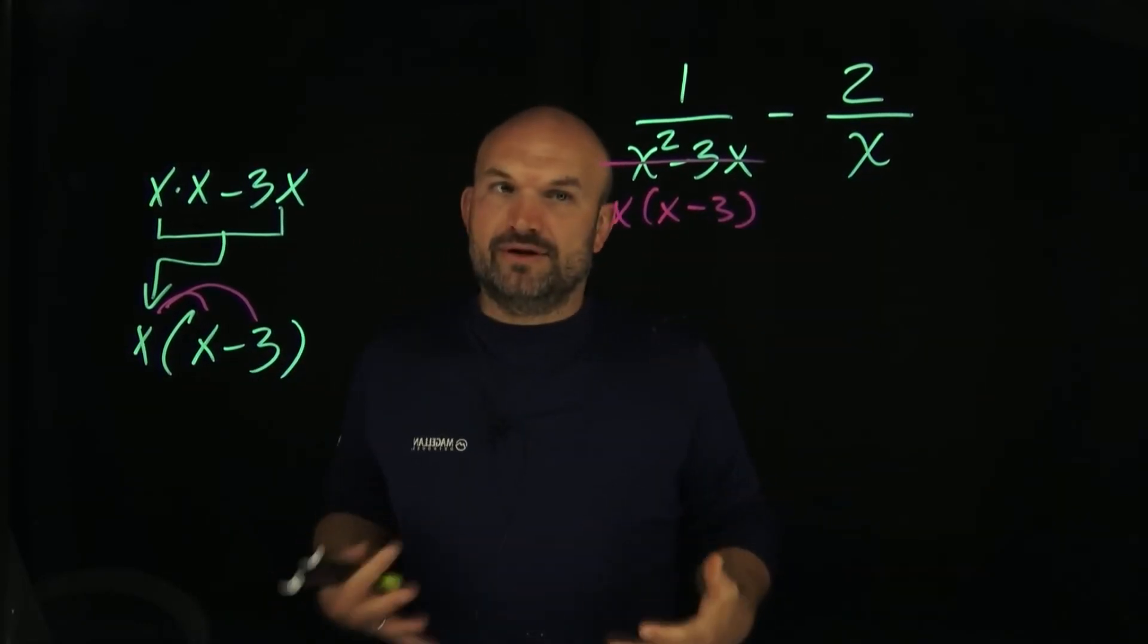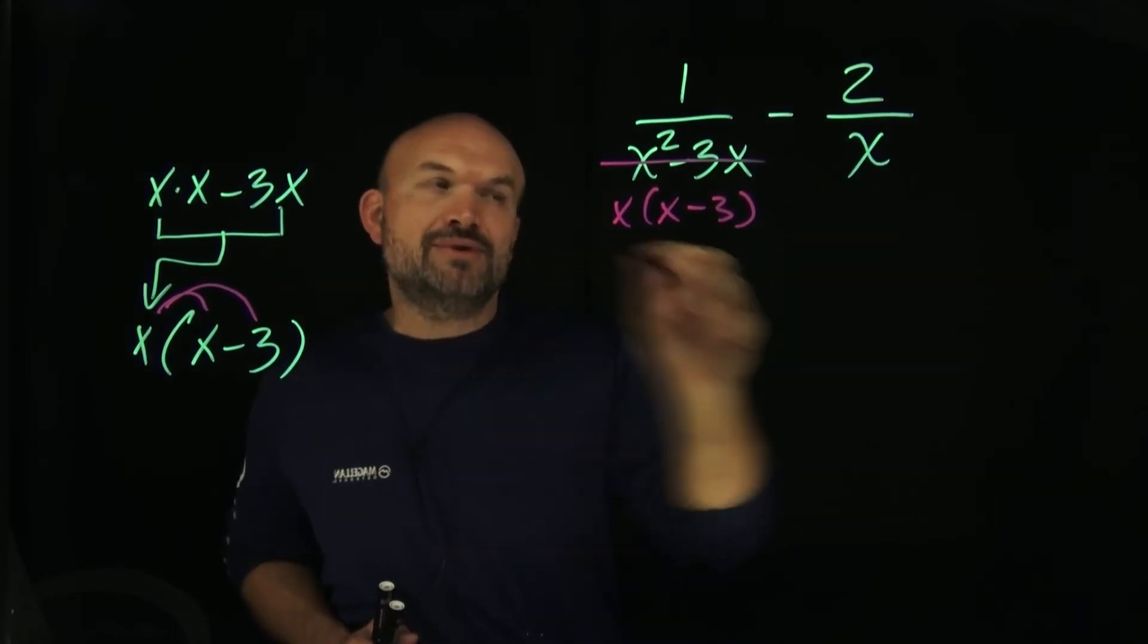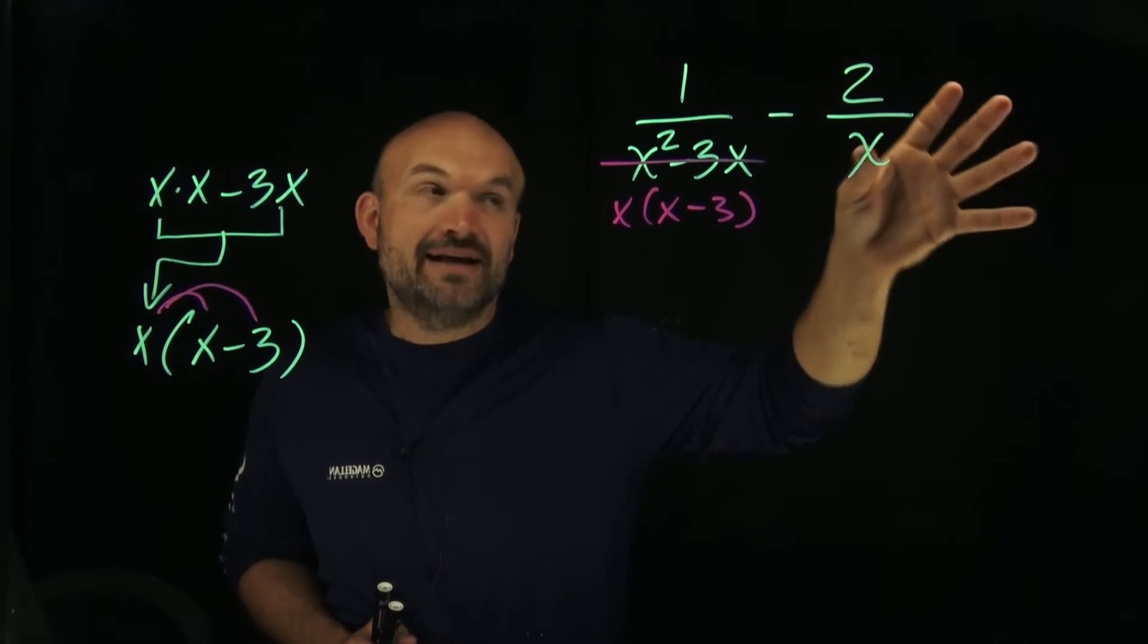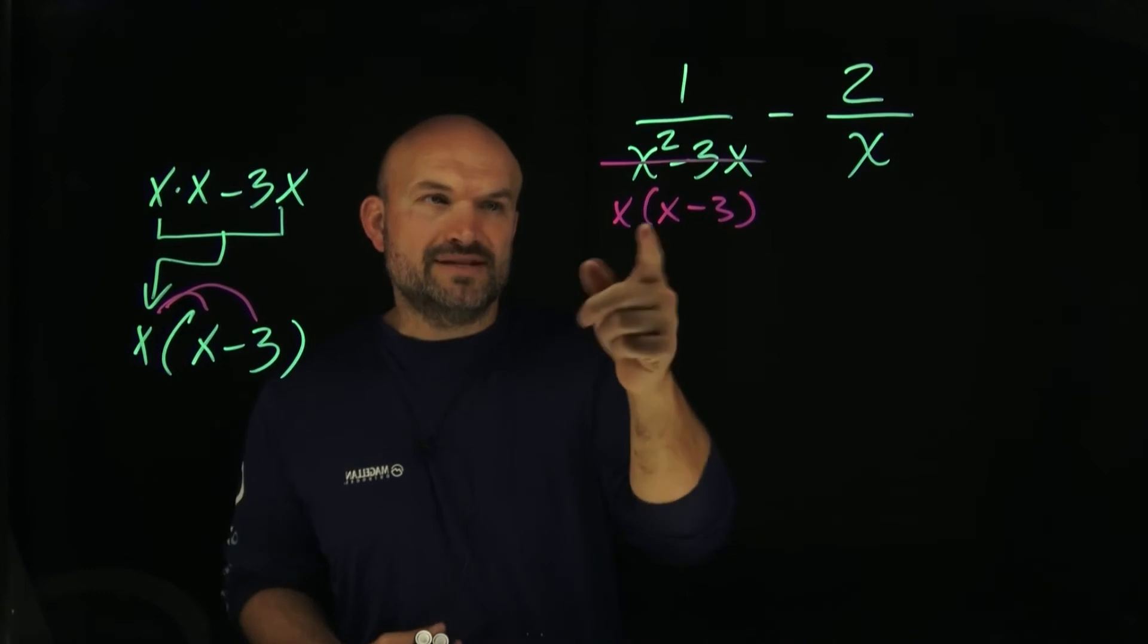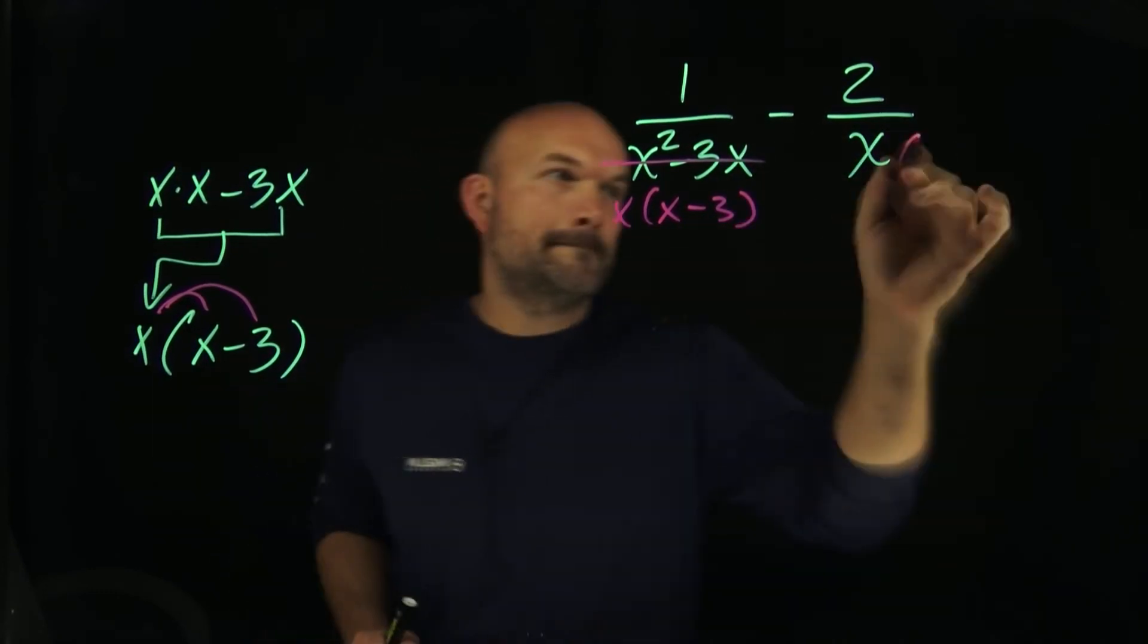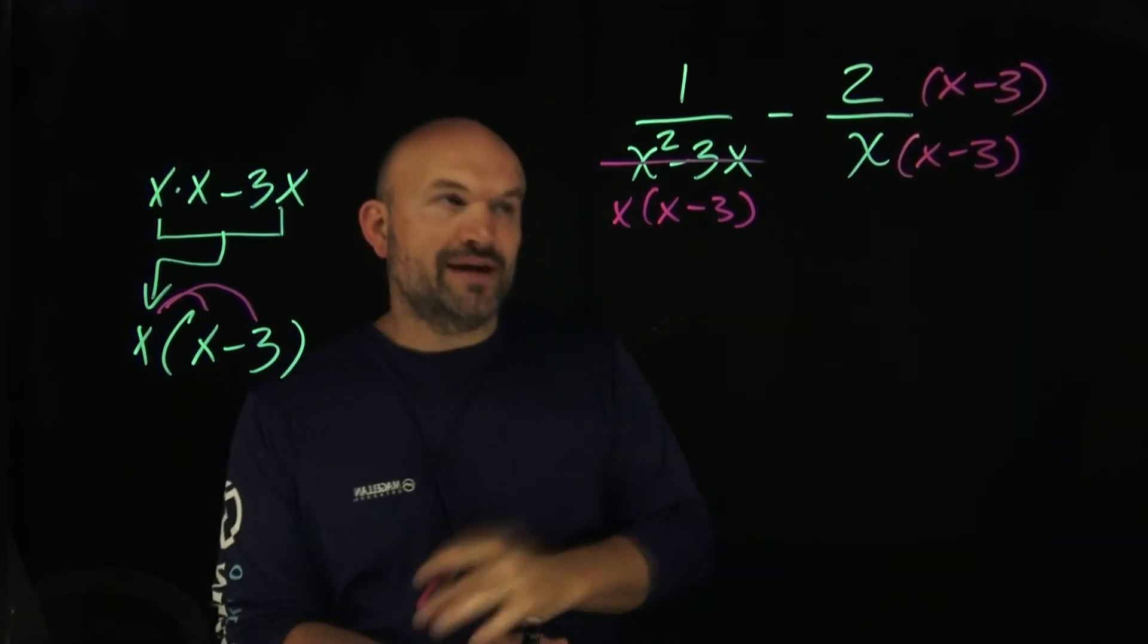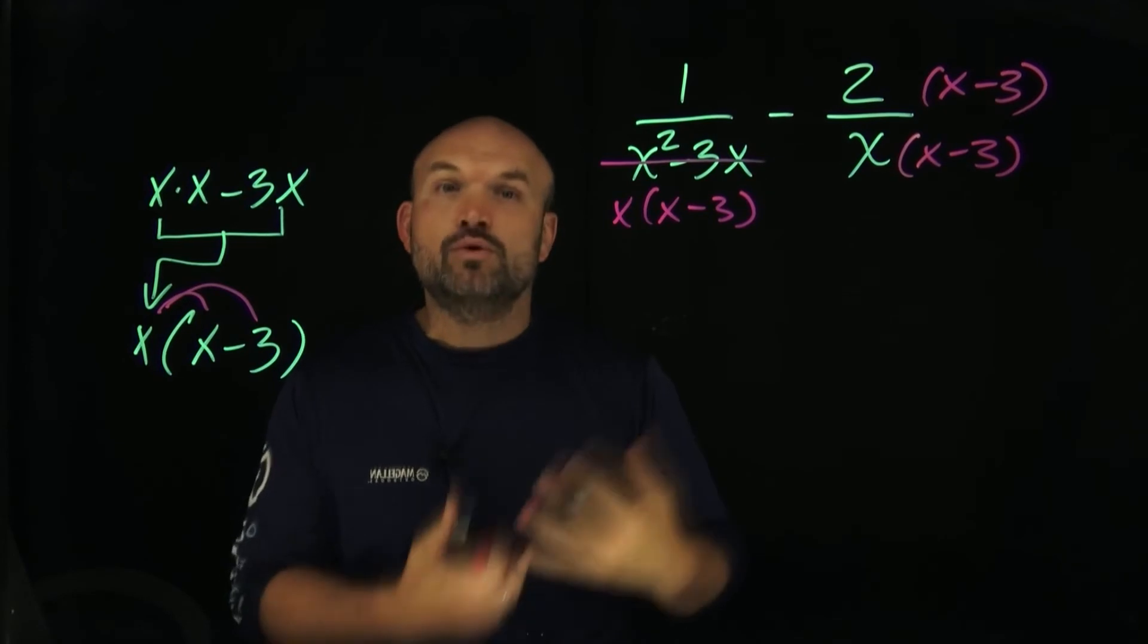If we want to get a common denominator, you recognize this already has the x and x minus 3, and this already has the x. What else do I need to obtain on this right hand side so it has the same denominator? Well, if this has x minus 3 and this doesn't, I need to multiply this by x minus 3. Remember, whatever you do in the denominator you also have to do in the numerator. That's what we call equivalent fractions.